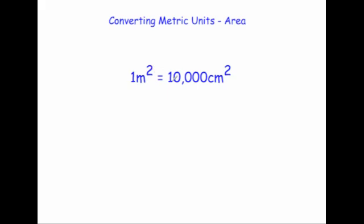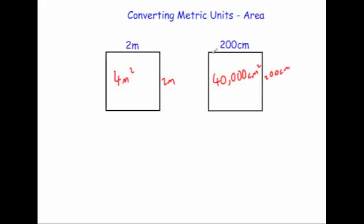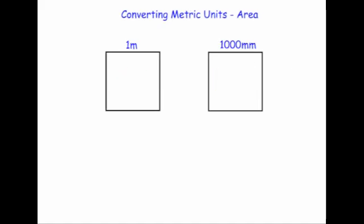In an exam, the most common mistake is that people think because one meter is 100 centimeters, one meter squared would be 100 centimeters squared. But because you're multiplying both lengths by 100 — this length by 100 and this length by 100 — overall it's going to be 10,000 times larger. So one meter squared is 10,000 centimeters squared.